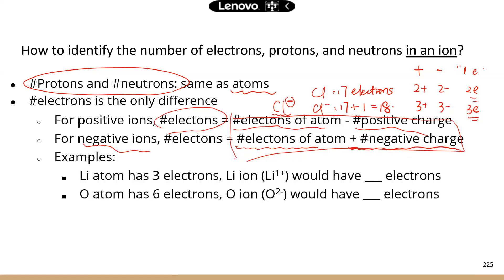The equations look complicated, but it's really simple — it's what we talked about on the previous slide. If you are a negative ion, that means you gain electrons, so of course it's whatever electrons you had originally plus the electrons you gain. For positive ions, the atom loses electrons, so it's the original number of electrons minus the electrons that you lose.